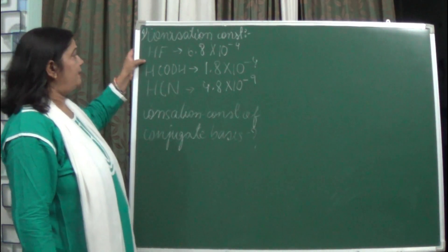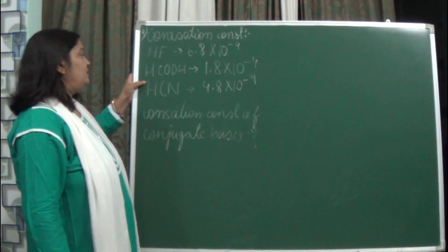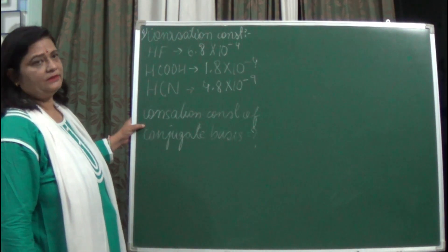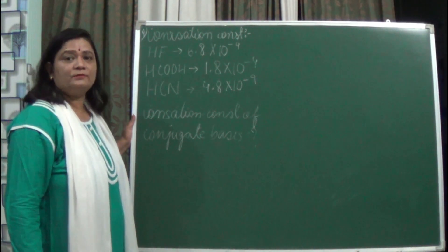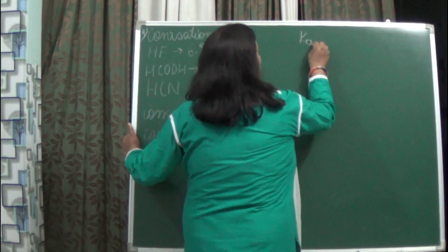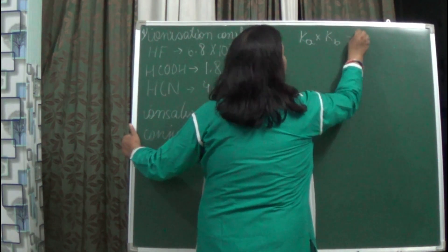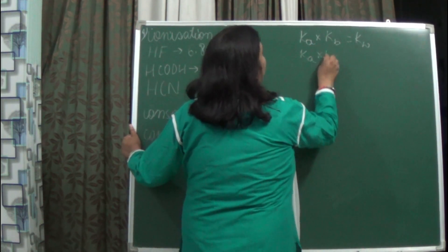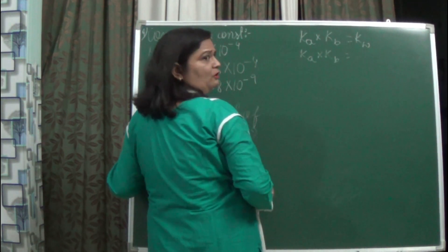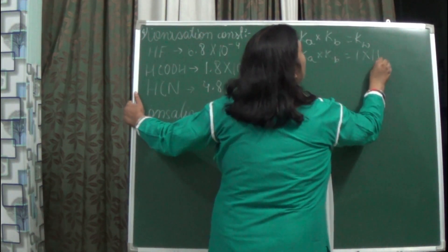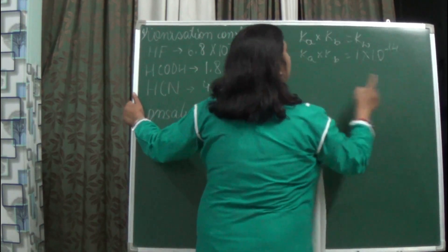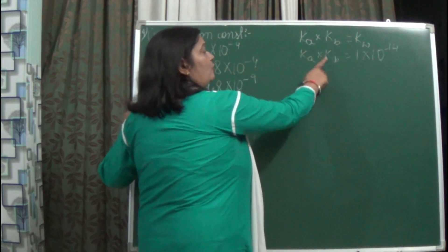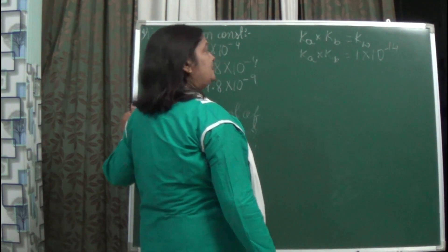Now coming to the next question. The ionization constants of HF, HCOOH, and HCN have been given, and you have to find the ionization constant of their conjugate bases. As soon as you see the words ionization constant of conjugate base, the formula that comes to your brain is: Ka into Kb is equal to Kw, where Kw equals 1 into 10 to the power minus 14.